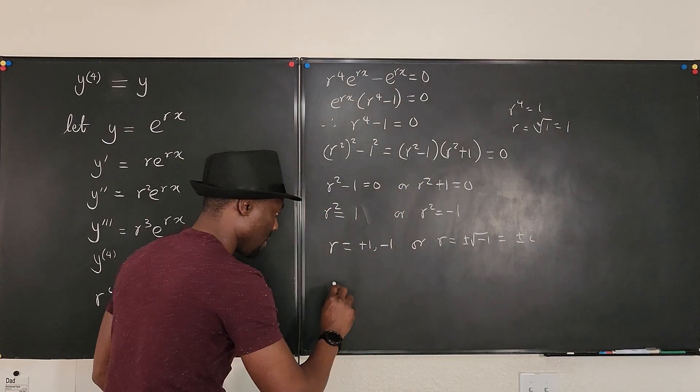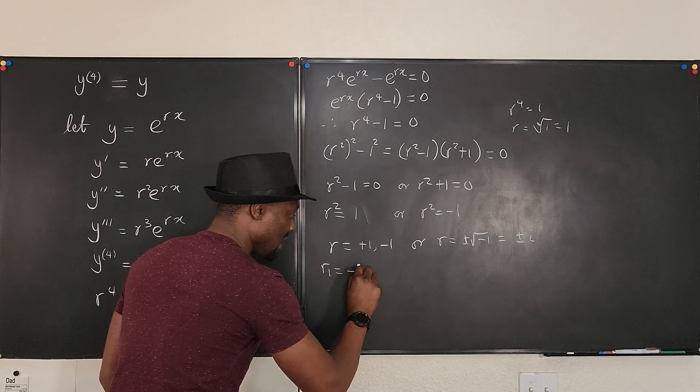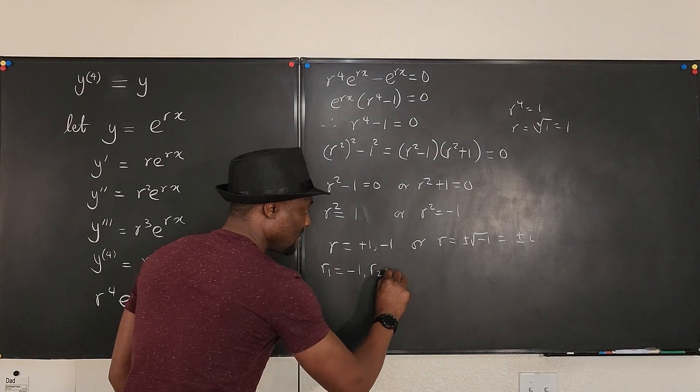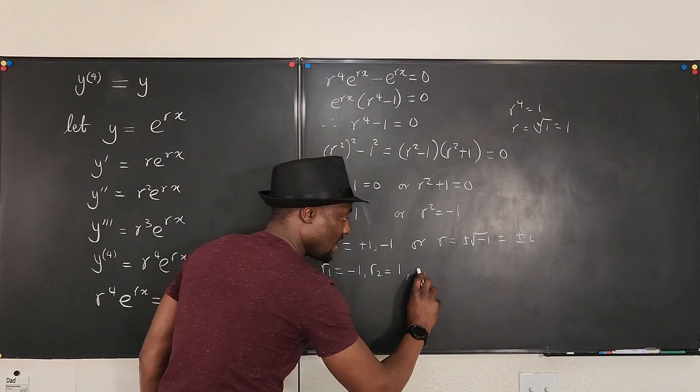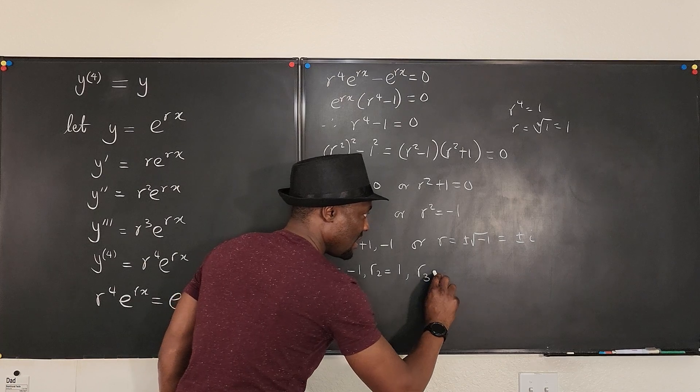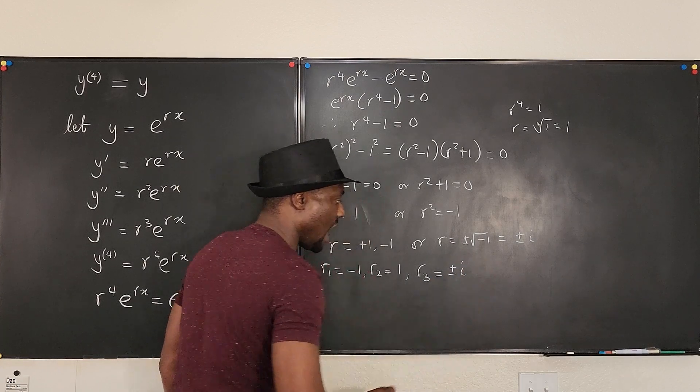The four answers are r1 equals negative one, r2 equals one. So for this r, I'm going to leave it this way as r3 equals plus or minus i.